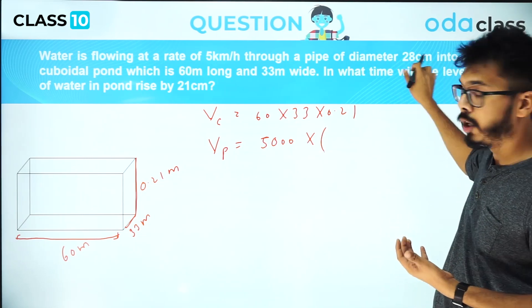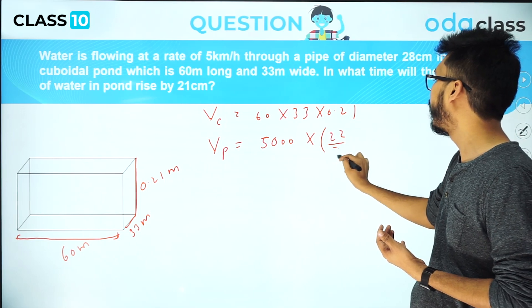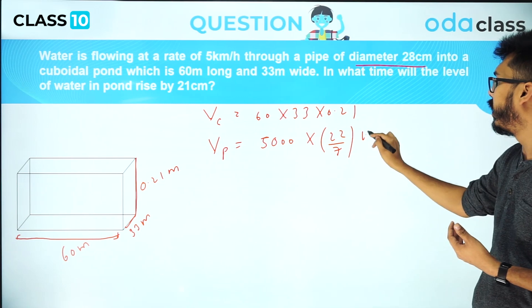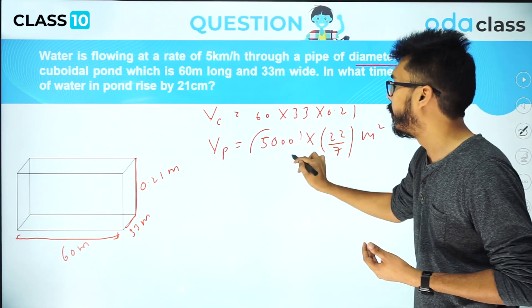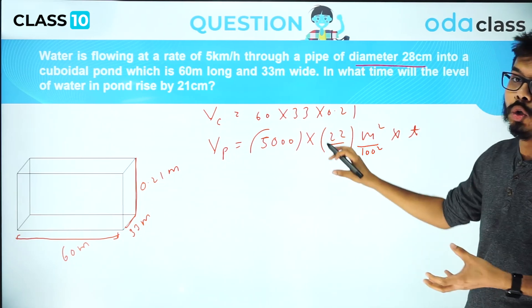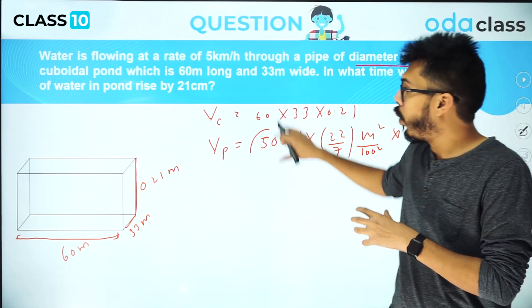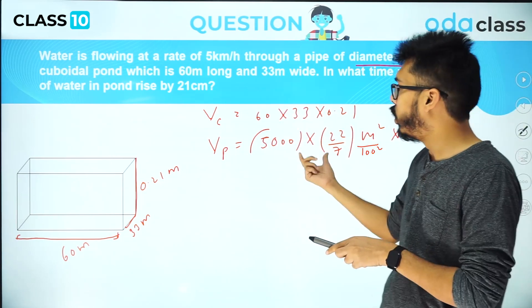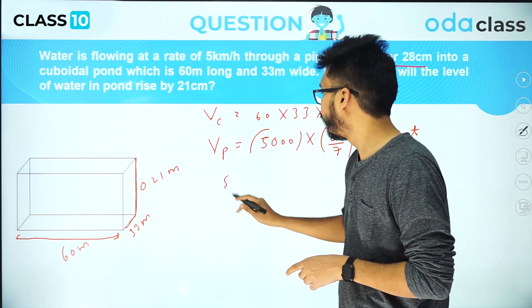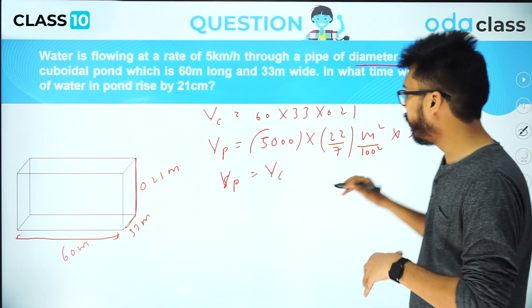The cross-sectional area you have to multiply is π r², which is 22/7 × 14² (since diameter is 28, radius is 14) into t. This much volume comes through the pipe in t time. Both volumes should be same because the whole volume is filling this cuboid, so Vp = Vc. From here we can work on time.